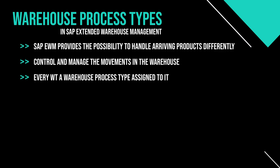The warehouse process type is connected to the activity of the movement performed in the warehouse, such as put away, stock removal, or internal relocations. In simple setups, the warehouse process type can include a storage type or even a specific storage bin to create movements from or to. For more complex movements, the warehouse process type can also be connected to a layout-oriented storage process control or a warehouse order creation rule.